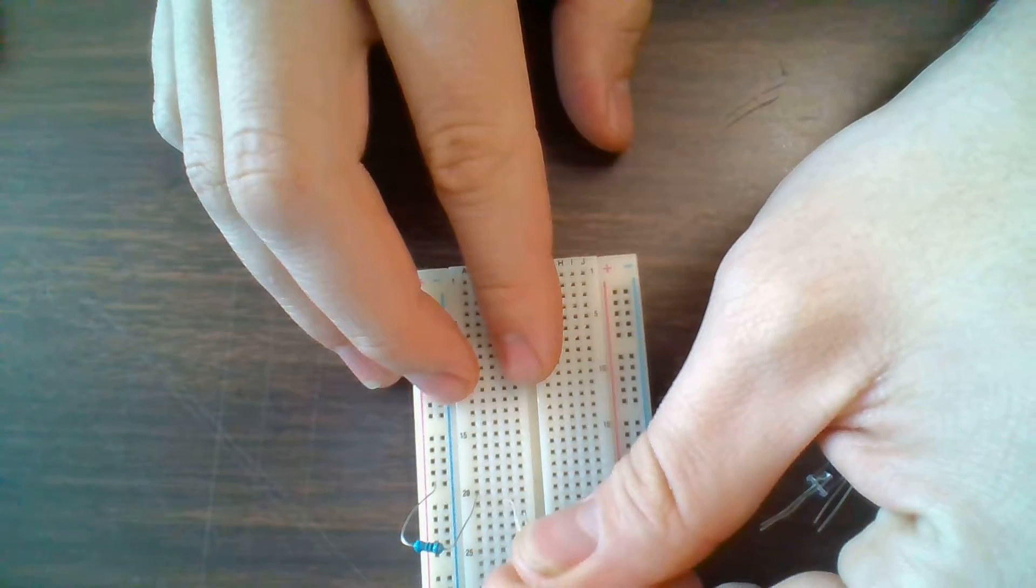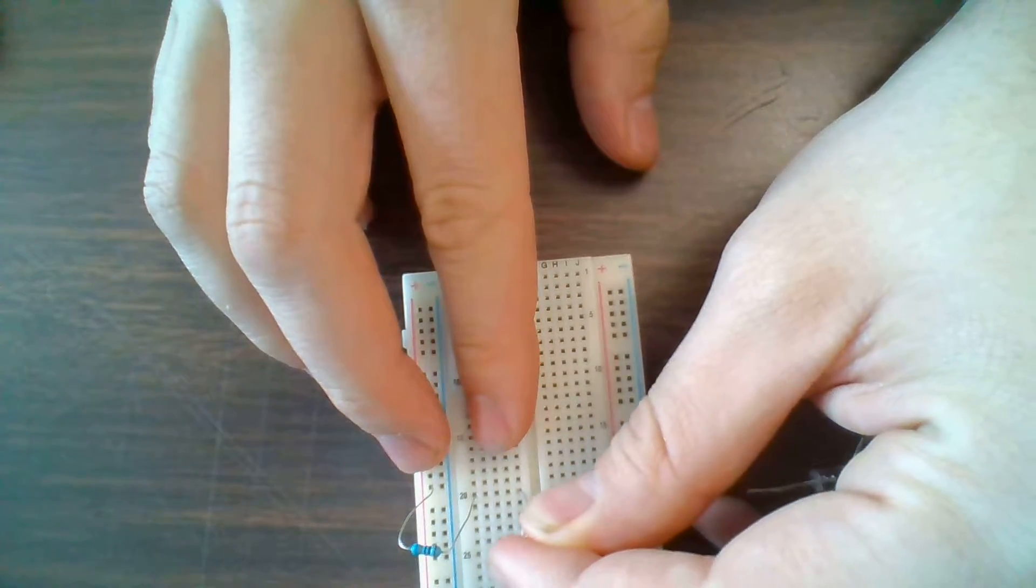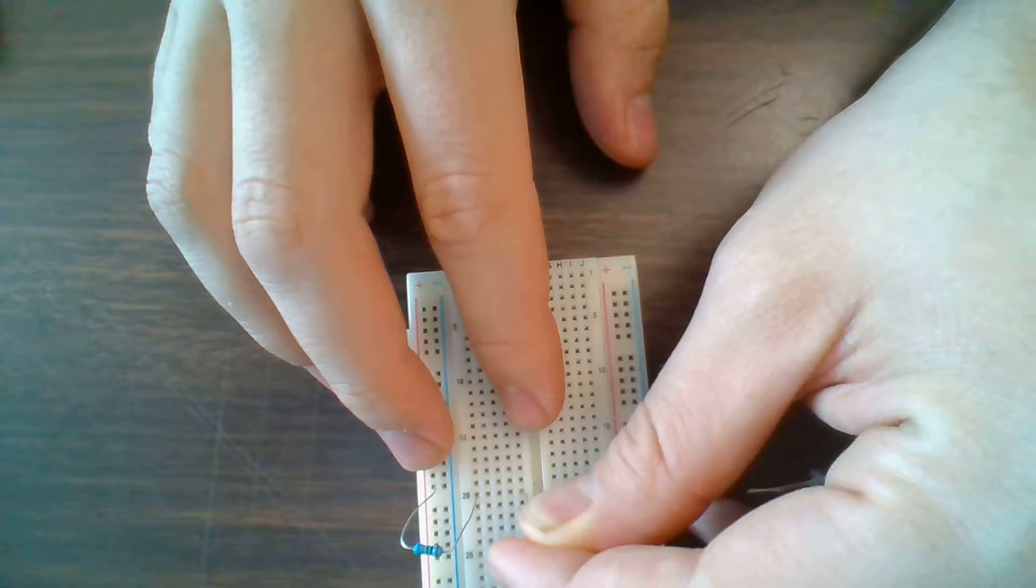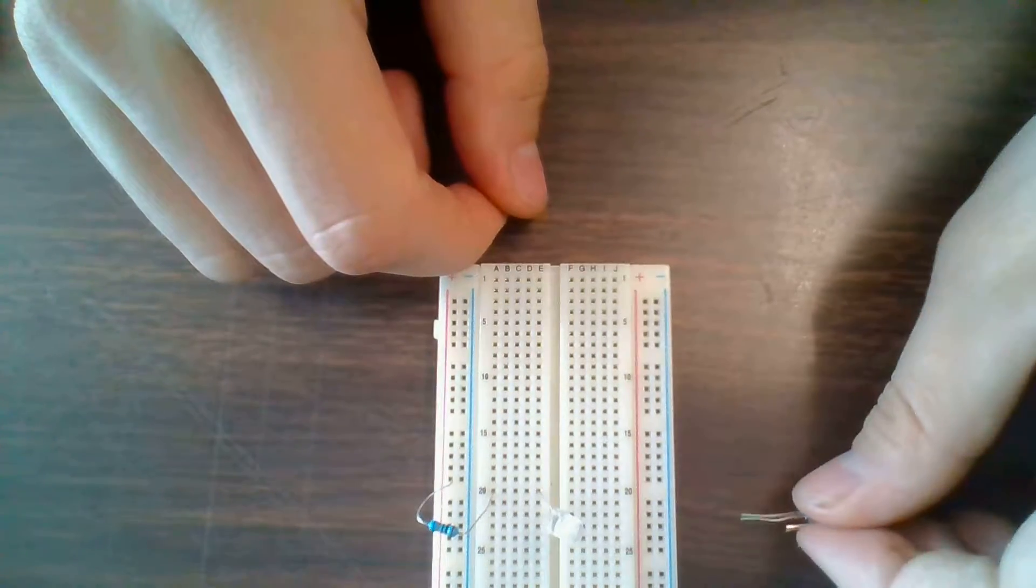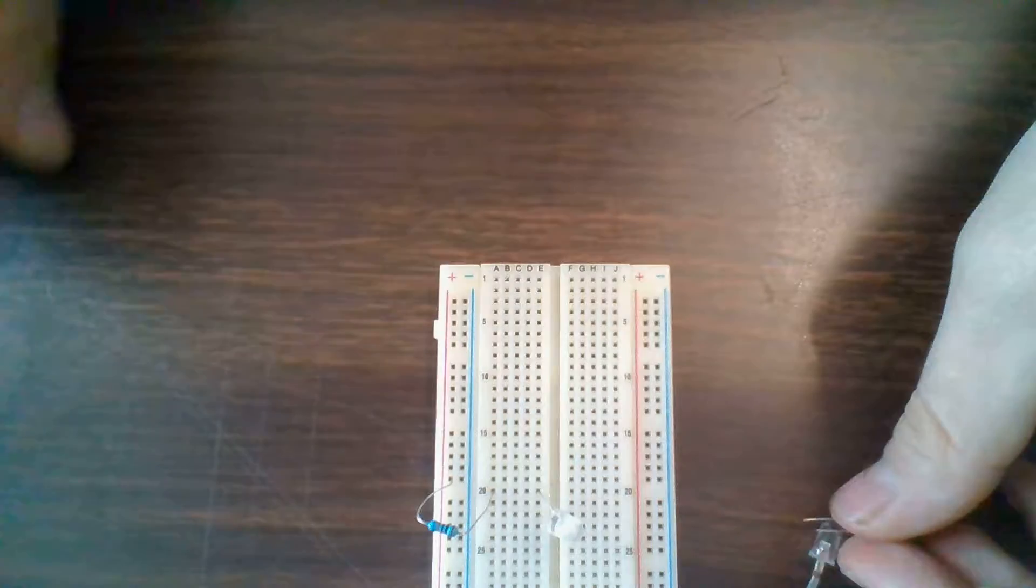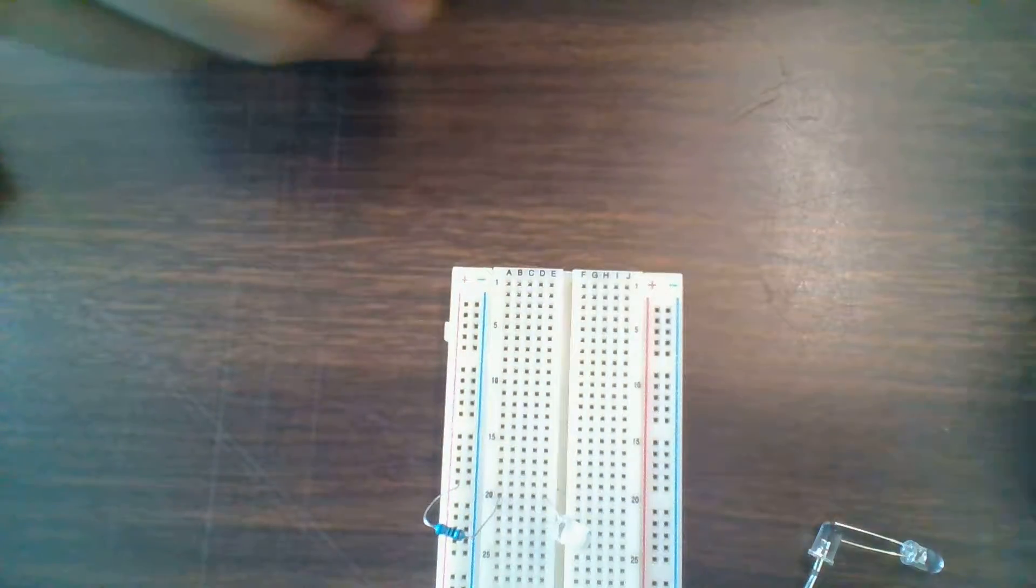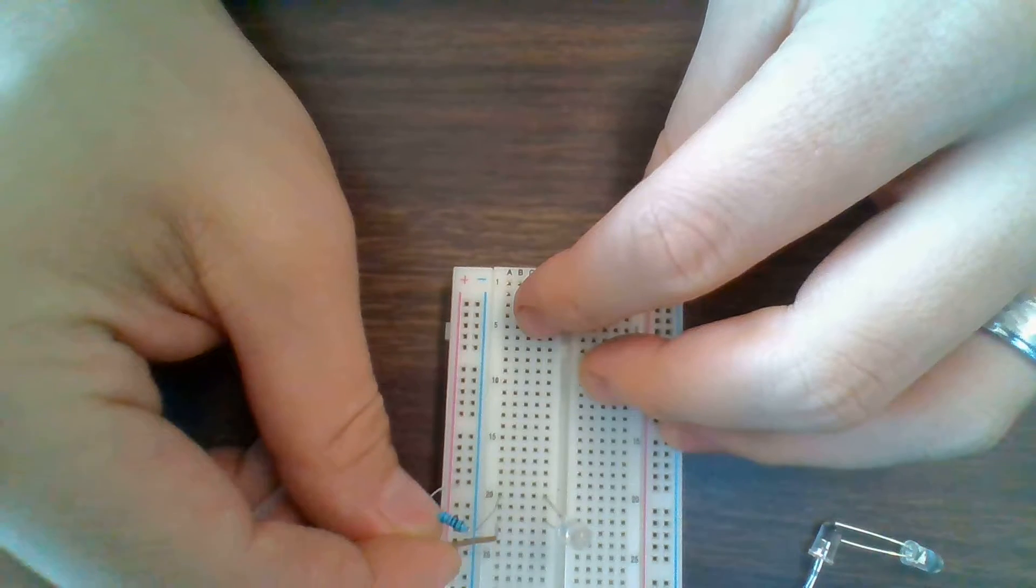So I don't want to do this, right, because then I have no connection with my LED. So I'm going to take it out. I'm going to make sure that my long end is connected to row 20 and I'm going to put my short end into row 22. Right now these two components are connected in series with each other.